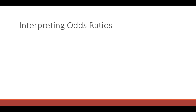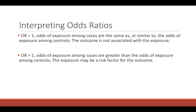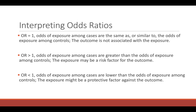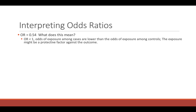A general rule of thumb for interpreting odds ratios — which also applies to relative risk: an odds ratio equal to 1 means the odds of exposure among cases are the same as among controls, meaning the outcome is not associated with the exposure. An odds ratio greater than 1 means the odds of exposure among cases are greater than controls — the exposure may be a risk factor. An odds ratio less than 1 means the odds of exposure among cases are lower than controls — the exposure might be a protective factor. Our odds ratio of 0.54 is less than 1.